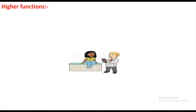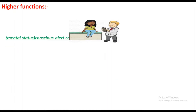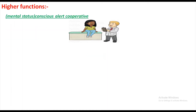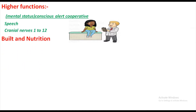Let's learn today how to examine patients. First of all, you will check for higher mental functions. The patient is sitting cooperatively, which is conscious, alert and cooperative, which will tell about mental status and speech. You will examine cranial nerves 1 to 12.